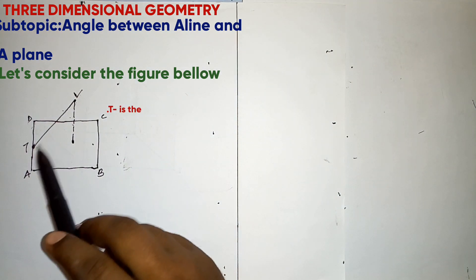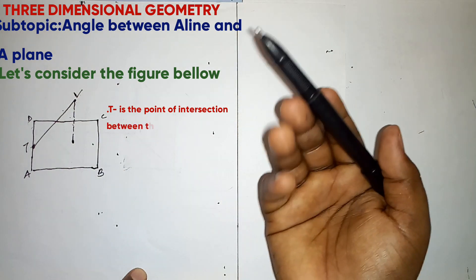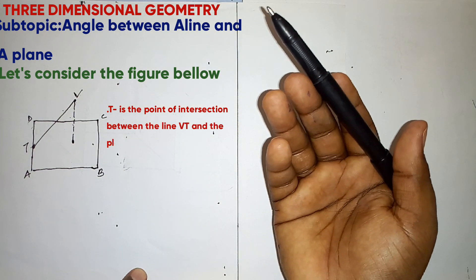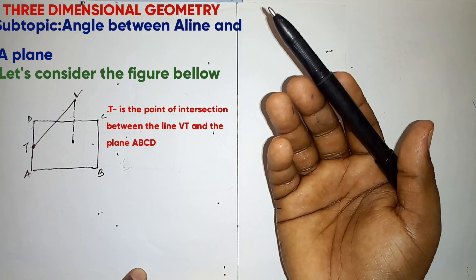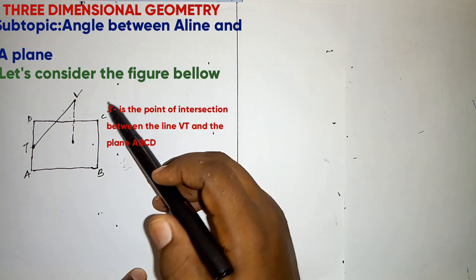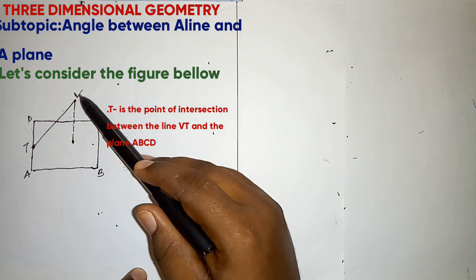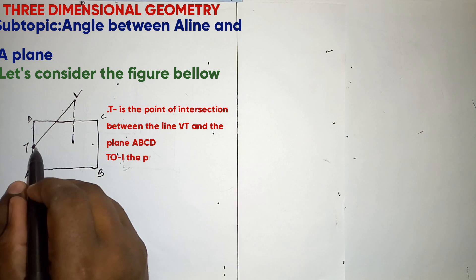Projection of the line TV, the shadow of the line TV that will be formed on the plane. So the projection of line TV will be equal to TO.